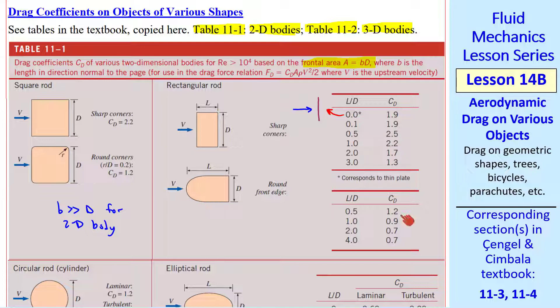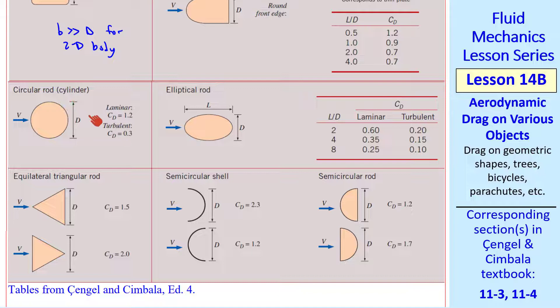For a round cylinder, the drag coefficient is smaller when the boundary layer is turbulent compared to laminar. We'll discuss cylinders and spheres in a later lesson.